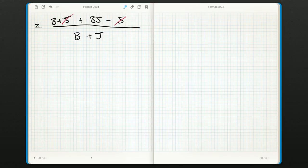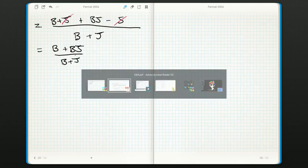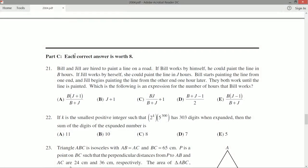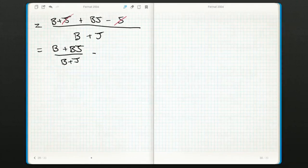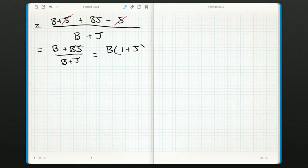And now these J's will cancel out. And we're left with B plus BJ, all over B plus J. Is that one of the possibilities? Not quite, but if we factor out the B, we will get B times 1 plus J all over B plus J, and I think that is A.